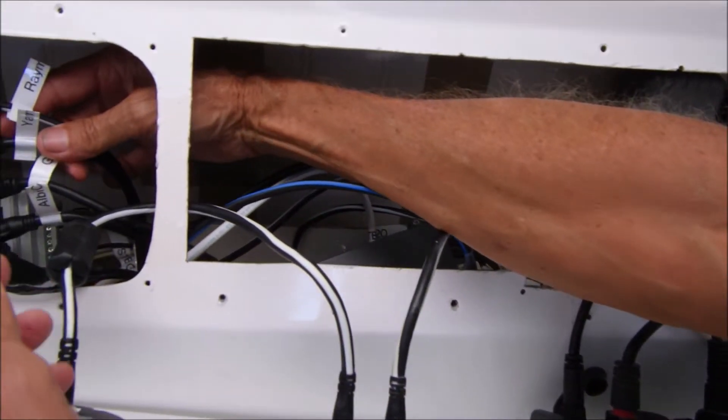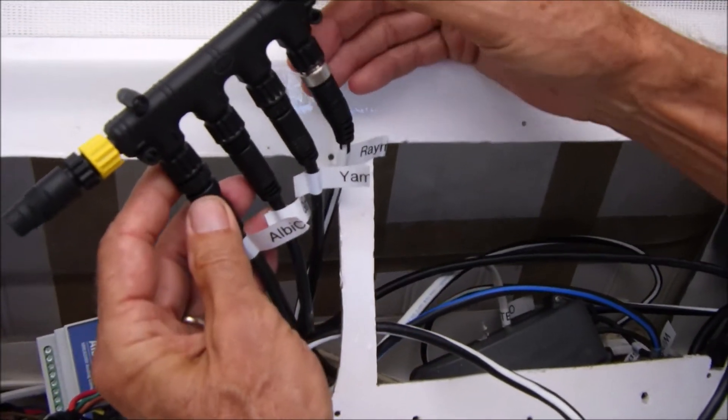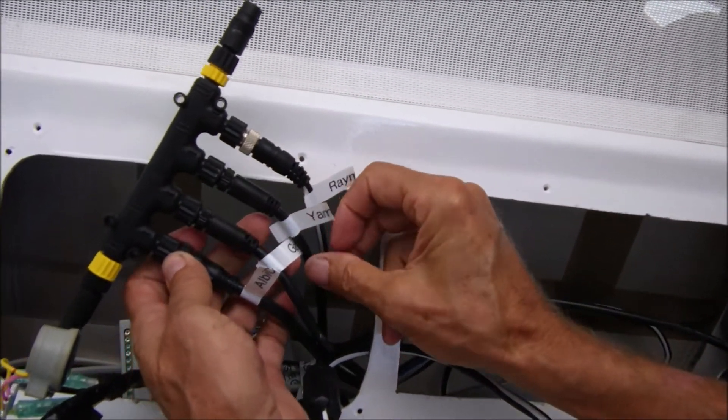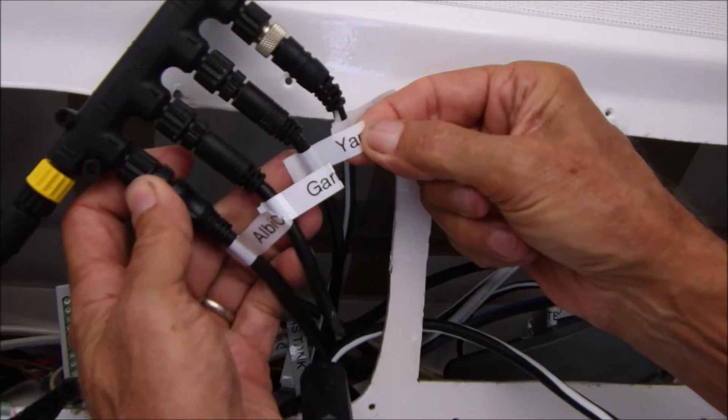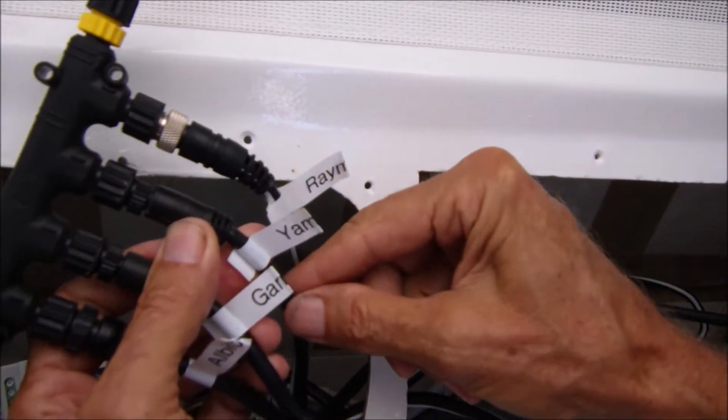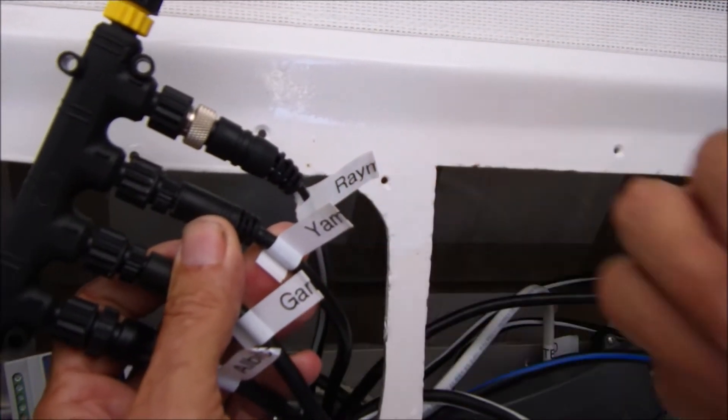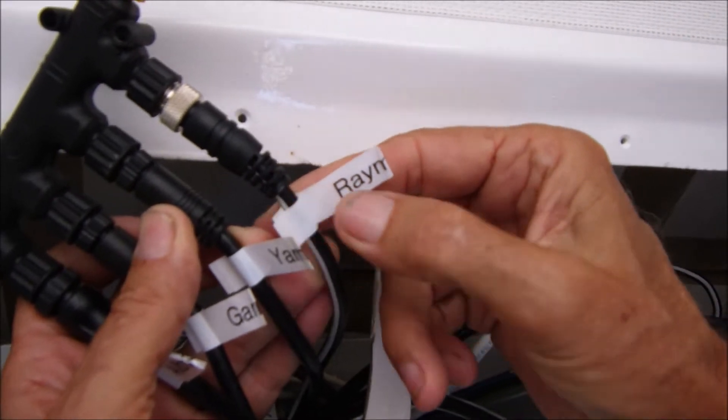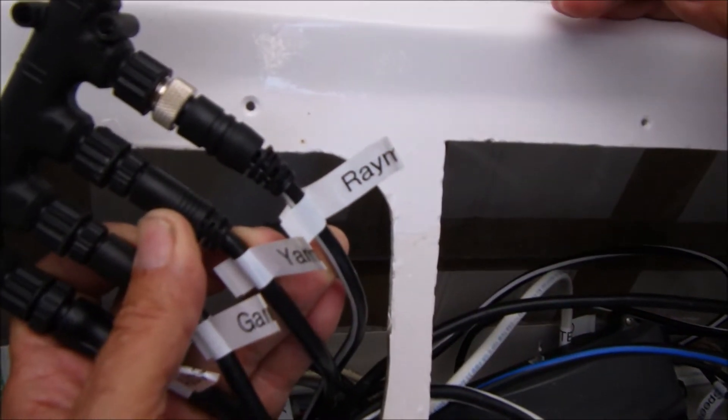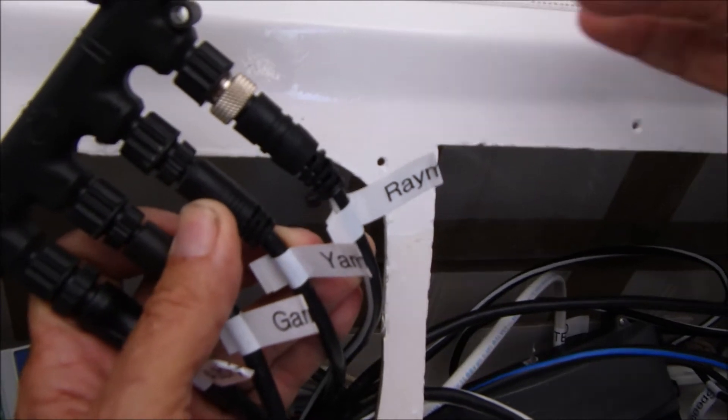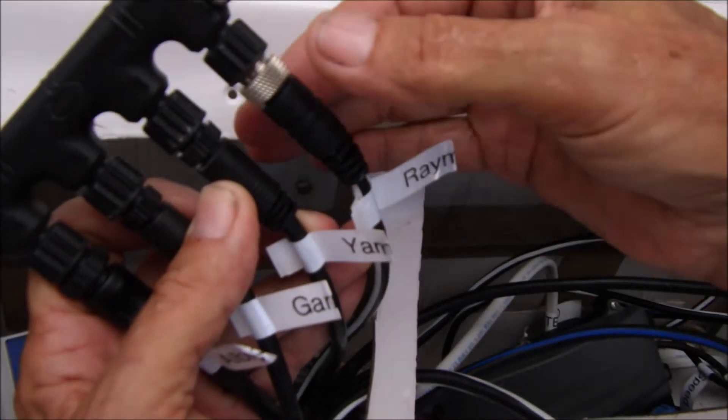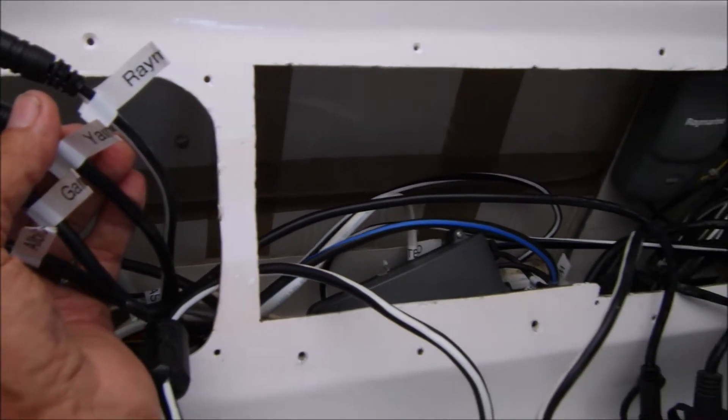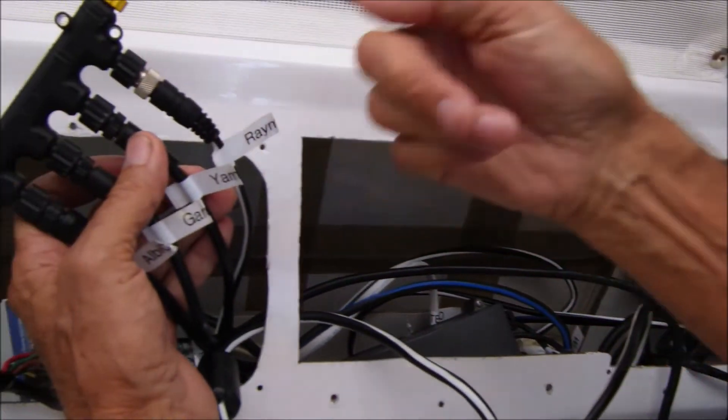This over here is the NEMA 2000 backbone. And I got a device that just has four ports on it so it's very neat and complete. So this goes to the Garmin. This goes to the Yamaha engine. And this is simply an adapter cable that goes from Yamaha to NEMA 2000. This connects into the Raymarine backbone which Raymarine calls SeaTalk. The only difference between SeaTalk and NEMA 2000 is the pin configuration. So it's just an adapter cable that goes from the SeaTalk backbone over to the NEMA 2000.